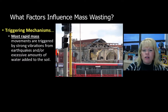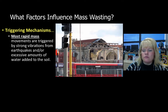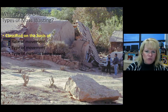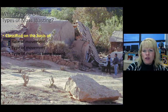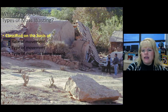Triggering mechanisms can definitely cause mass wasting — something like an earthquake, as we see in Christchurch, definitely influences mass wasting. Sometimes mass wasting is very slow and not from triggering mechanisms, but in some cases it's very fast. This is an example of fast mass wasting — a rock slide — where the rate of movement is based on the slope, the type of rock, its location, humidity, and a number of other factors.